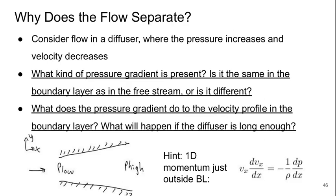So why does the flow separate? To figure this out, it's easier to think about an internal flow example. Let's consider flow in a diffuser, basically an expanding channel where the pressure is increasing and the velocity is decreasing in the direction of flow.